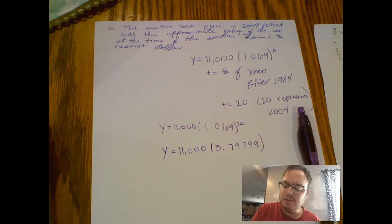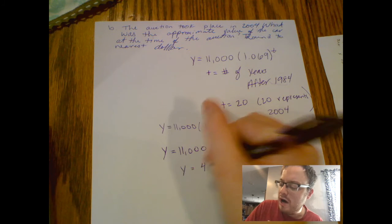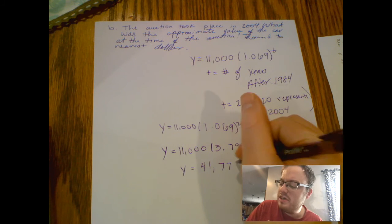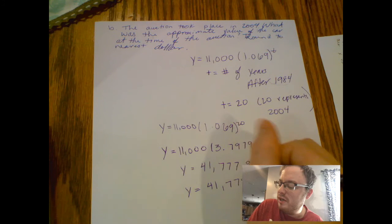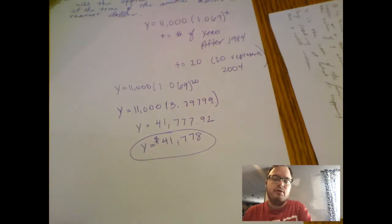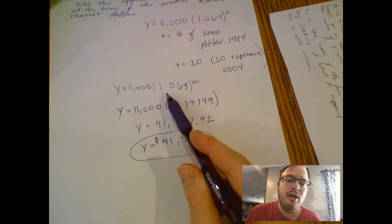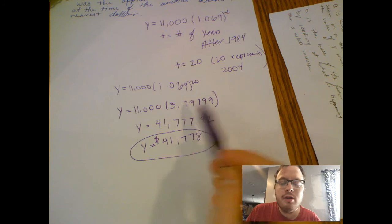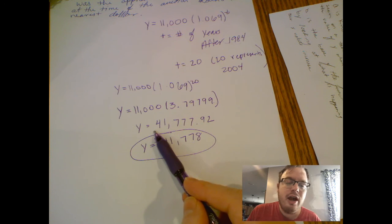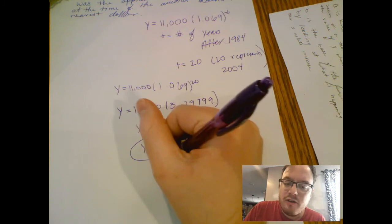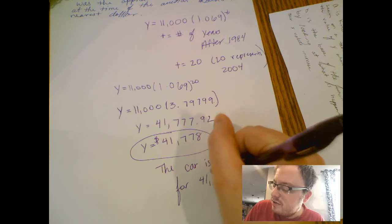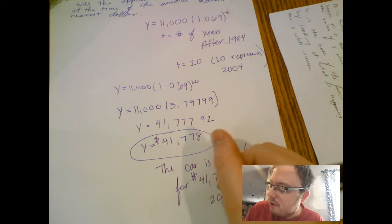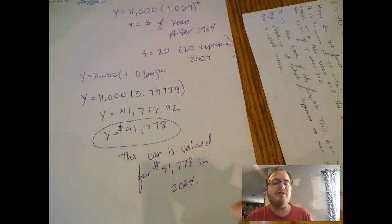I'm going to multiply this by 11,000, and if you do this on your calculator you should get y equals $41,777.92. But they want this to be rounded to the nearest dollar. So the price of the car in 2004 will be $41,778. That will be the price of the car. If you wanted to write a sentence you could say: the car is valued for $41,778 in 2004.